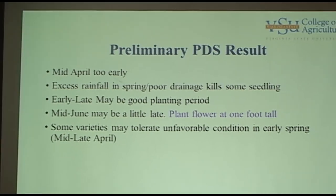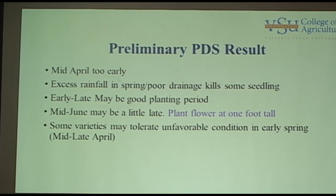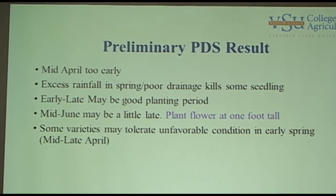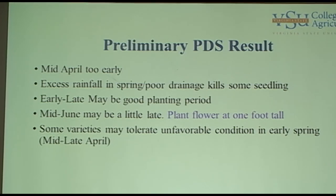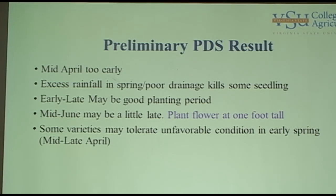From our personal observations in the field: April 15th planting is a little too early — the soil temperatures at that point, especially night temperatures, are very low and might kill the seedlings, so we had poor emergence. We had a lot of rainfall in April and May, so some seedlings were killed by excessive water, which cuts off oxygen to the roots and the plant dies. Early May to end of May seems to be a better time to plant the crop.